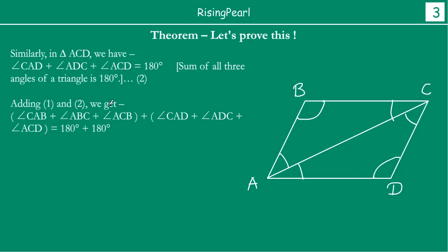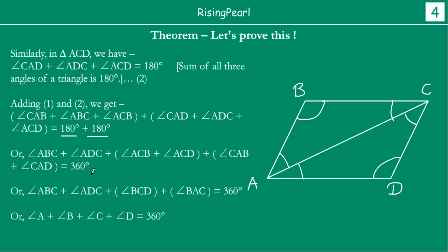So if we call these condition 1 and condition 2, then we can add condition 1 and condition 2. Adding 1 and 2, we get 6 angles — angles 1, 2, 3, 4, 5, and 6 — equal to 180 degrees plus 180 degrees. Now, this angle plus this angle from the two triangles combined becomes angle A, and similarly this angle plus this angle becomes angle C.